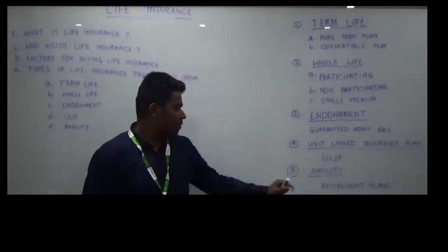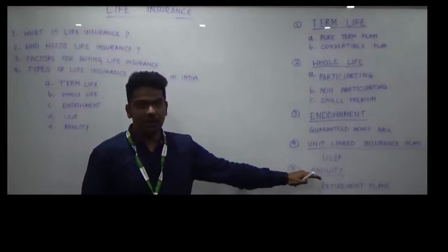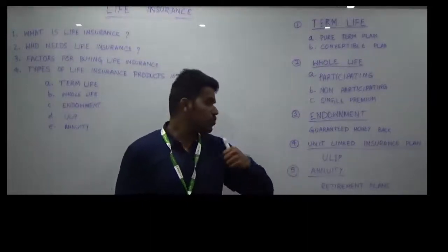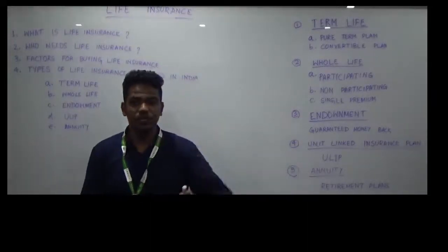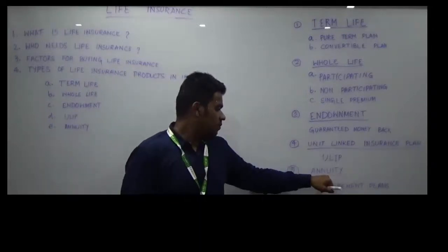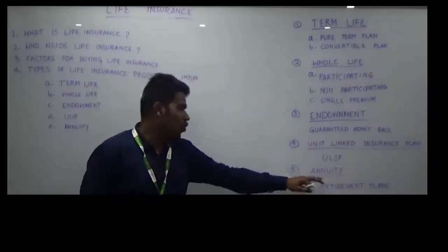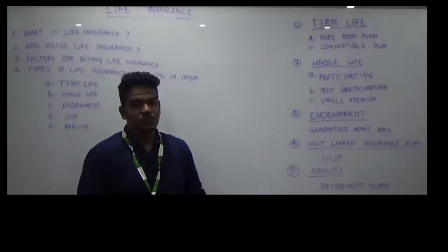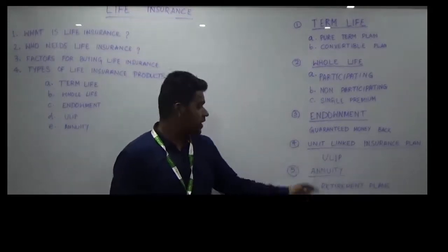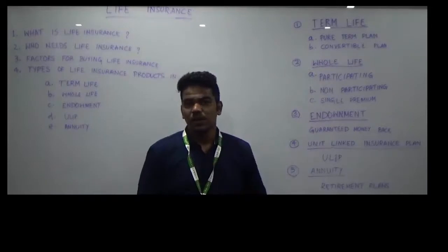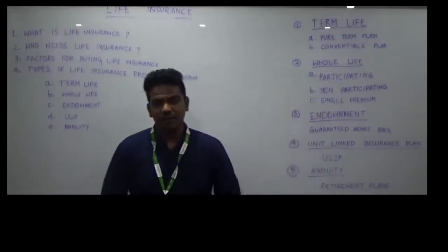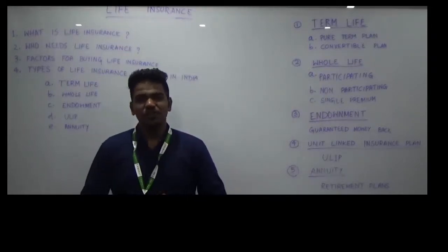Now let us understand the annuity product. Annuity products are essentially retirement plans. I buy a retirement plan and after a certain age — say after 50 years of age — I receive periodic payments over five years, ten years, and so on. These are the different types of life insurance products available in India along with their subtypes. I'll complete my topic here. Thank you.